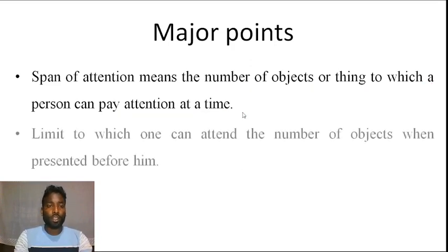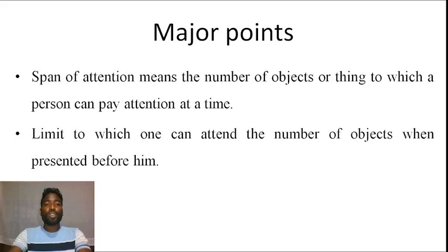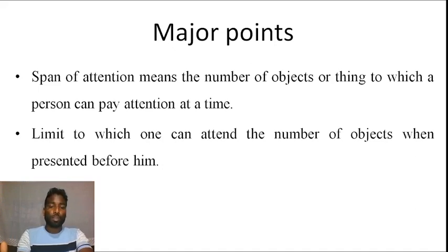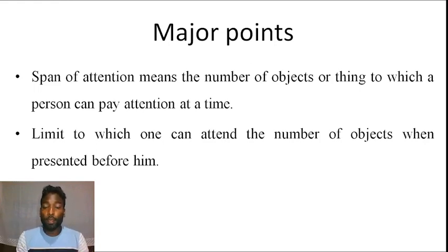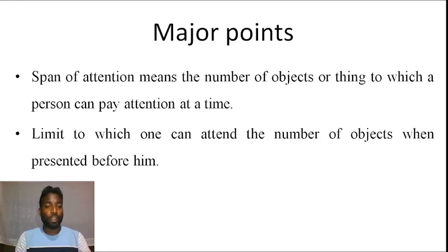Another point regarding span of attention is the limit to which one can attend to a number of objects when they are presented before them. For example, my limit might be that I can only pay attention to two specific objects at a time, because I may also be paying attention to my mobile phone or playing a game.